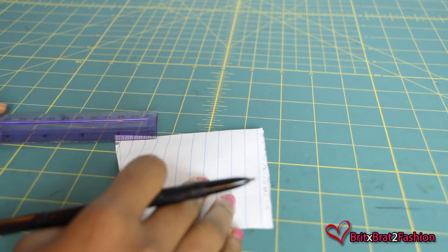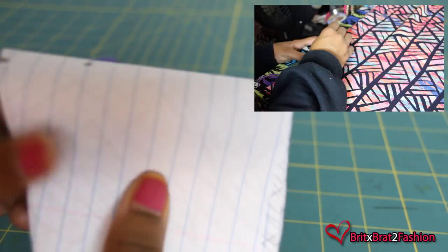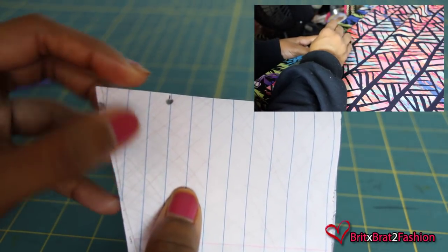From the outer edge, you want to measure and mark about 9 inches along the top edge and make a little notch at the fabric so you can mark your points.